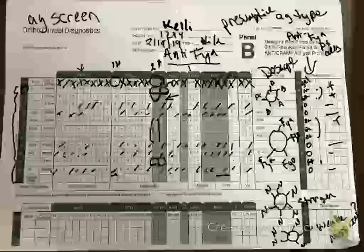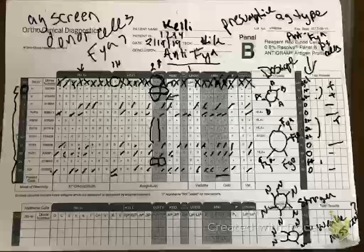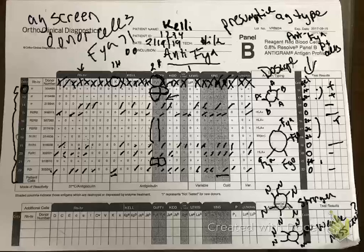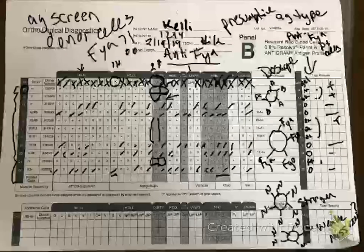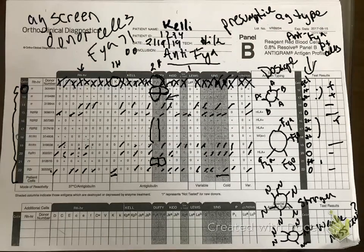If we need to transfuse this patient and they've been identified with a Duffy A antibody, we must antigen screen donor cells for Duffy A. If we transfuse them with Duffy A-positive cells, they will have a transfusion reaction. This is just one example of antibody identification — it's really important that you understand this process.